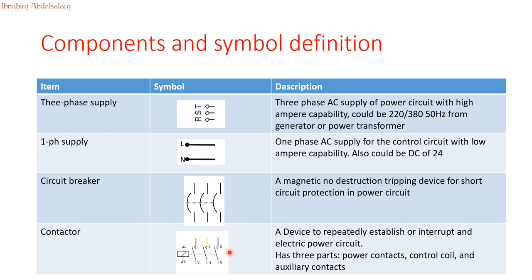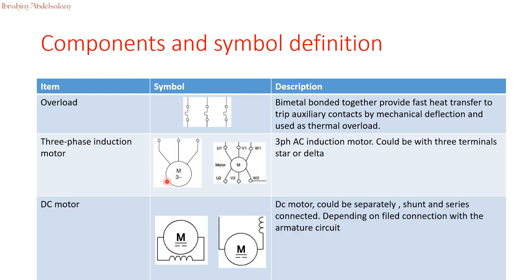The contactor has three contacts and an energizing coil. The overload is represented by this sample — I will show other samples in our discussion. The three-phase induction motor has three legs and can be internally connected as star or delta. If it has six legs, this induction motor can be connected as either star or delta form.